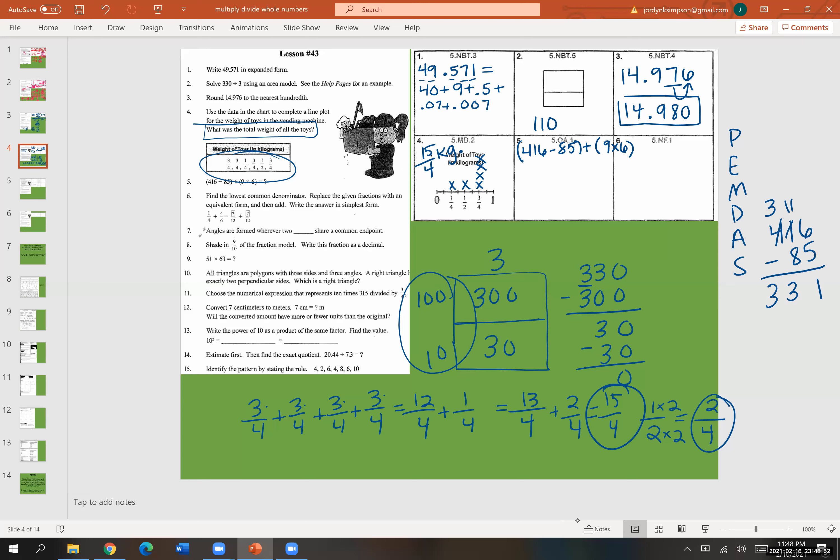So 331 is what we'll replace this with. Nine times six is 54. So we'll replace that with 54. Bring down what we didn't use, which is my plus. So then let's do 331 plus 54. One and four is five. Three and five is eight. So 385 is my sum.